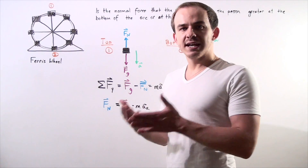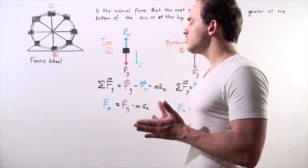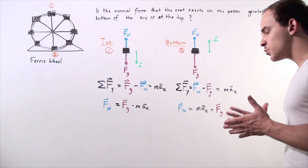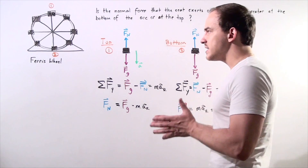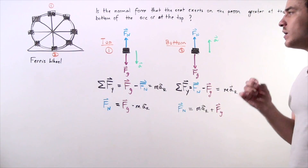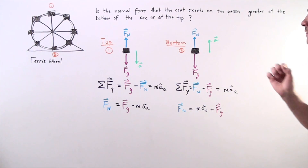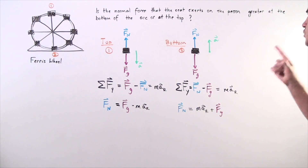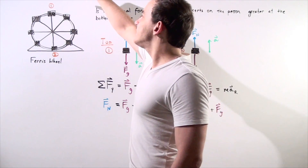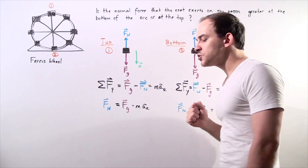Suppose a person gets inside a ferris wheel and the ferris wheel begins to rotate with some rotational speed. The person's rotational speed is exactly the same as the ferris wheel's rotational speed. We want to answer the following question: is the normal force that the seat exerts on the person greater at the bottom of the arc or at the top of the arc?